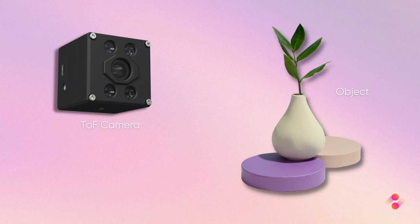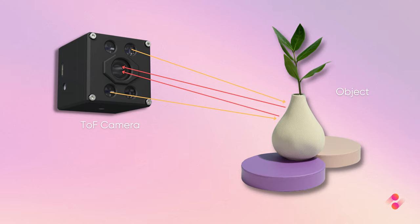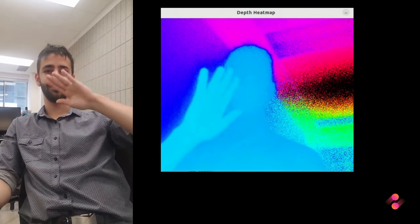This process is repeated for every pixel in the image, resulting in a dense depth map of the object or scene.